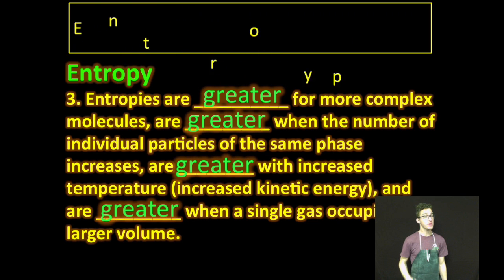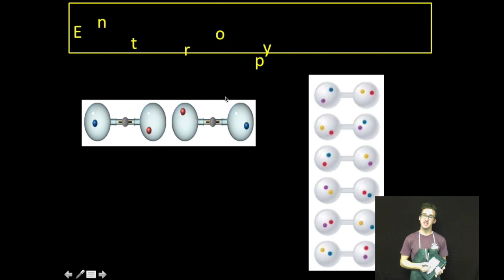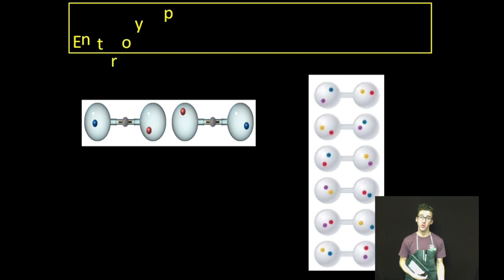It will be greater when the number of individual particles of the same phase increases. So, as you take a look at the two images, we've got a sample of gas made up of two particles versus a sample gas made up of four particles. We would say the entropy is greater here because we have a greater number of particles and a greater number of possible arrangements or microstates.